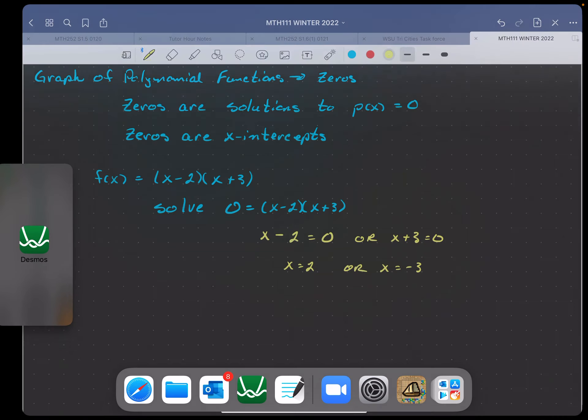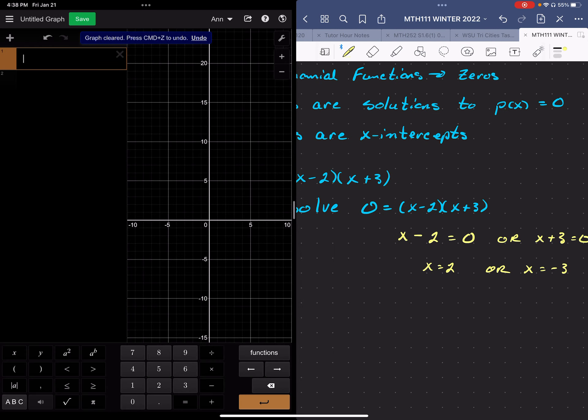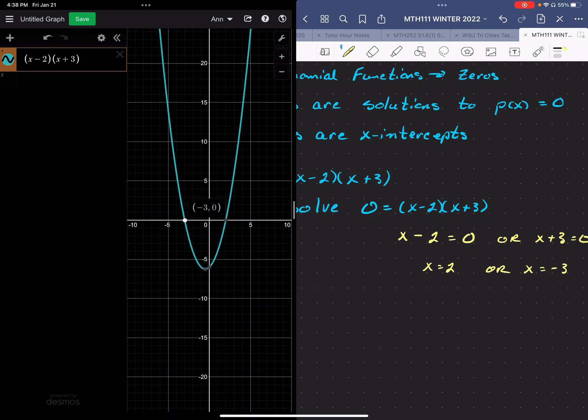And sure enough, if I graph x minus 2 times x plus 3, where do I find my x-intercepts? Well, I find them right there at negative 3, 0, and at 2, 0. Okay, that is not a coincidence.